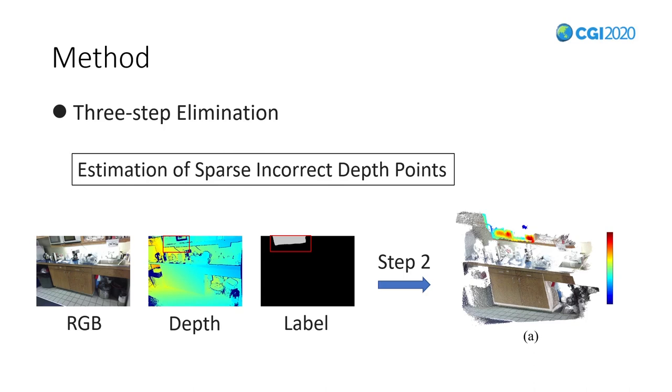In order to balance the local density and statistical information characteristics of each point, we sum them and normalize the two. This allows us to remove sparse error points in the second step. As shown in the picture on figure A, the bluer the points, the more likely it is the wrong point.